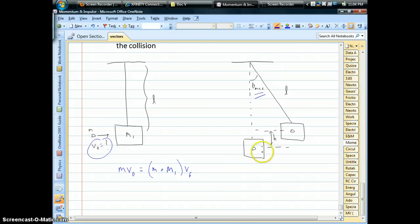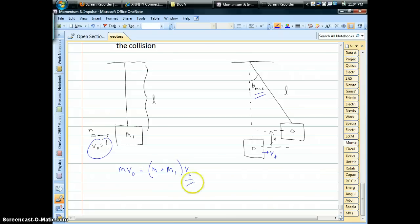So right after the collision, when the bullet is stuck inside the block, it starts moving at some speed, which we'll just call v_final. Okay, so the only way it's going to work is if we can figure out what this v_final is, then we can solve for v_initial, which is what we're after.